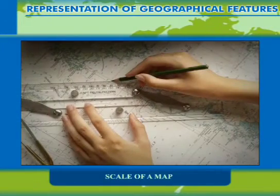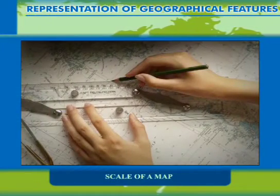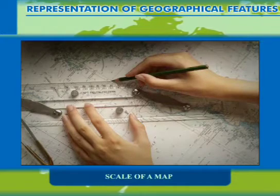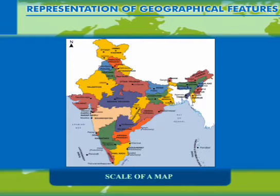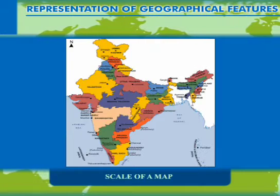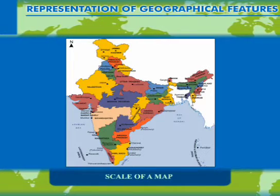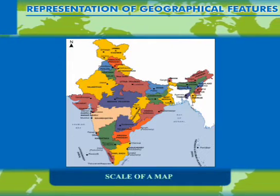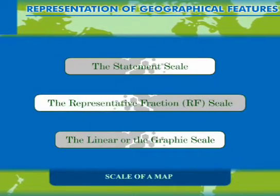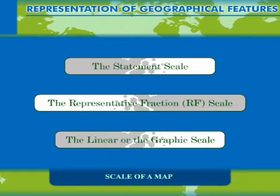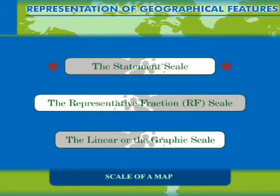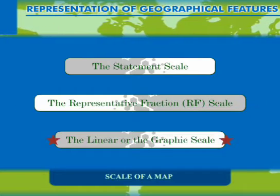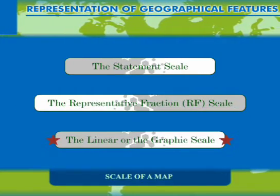It means that 1 cm measured on the map is equal to 1 km on the ground. Thus, the scale helps us reduce the size of the earth and represent it on a piece of paper. The scale used on a map is of three types: the statement scale, the representative fraction scale (RF), and the linear or graphic scale.